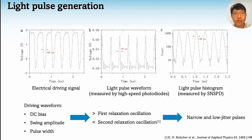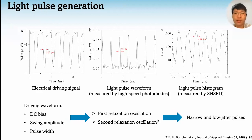To determine the driving conditions for the distributed feedback laser, often one can numerically simulate the light output using rate equations, which will take a lot of time, so instead we take an experimental route. First, we use the minimum pulse width of our electrical driver, which is 120 picoseconds, and we set the bias current of the driver just below the threshold of the laser. Then, we tune the pulse amplitude of the electrical driving signals before the second relaxation oscillation appears. In this way, we can generate lateral and low-jitter pulses with randomized phases, with a width of less than 45 picoseconds.